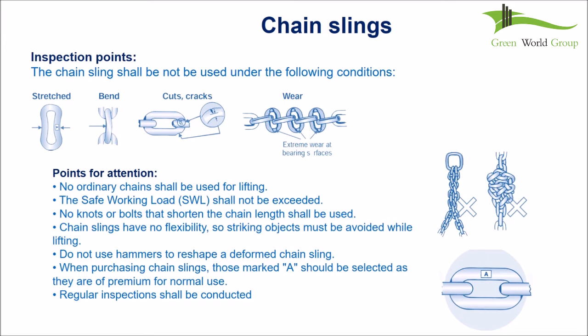A rope sling must be selected wherever possible for lifting. The chain sling shall not be used under the following conditions: no ordinary chains shall be used for lifting; the SWL shall not be exceeded; no knots or bolts that shorten the chain length shall be used; chain slings have no flexibility so striking objects must be avoided while lifting; do not use hammers to reshape a deformed chain sling. When purchasing chain slings, those marked 'A' should be selected as they are premium for normal use. Regular inspections shall be conducted.